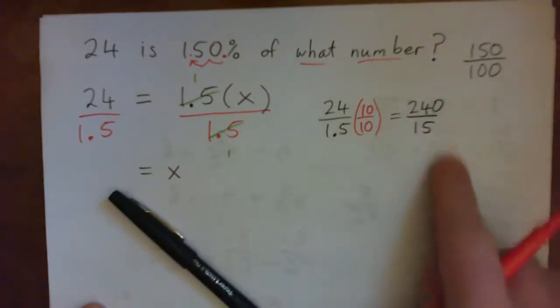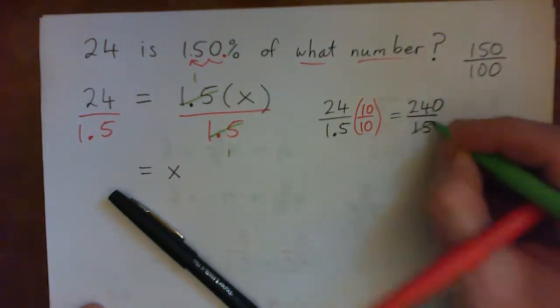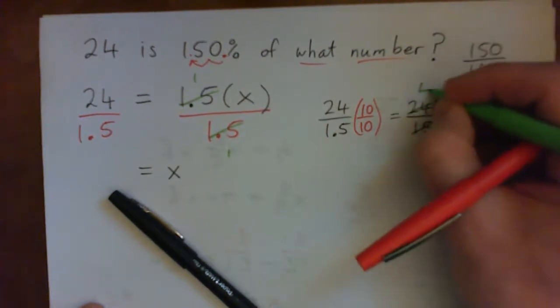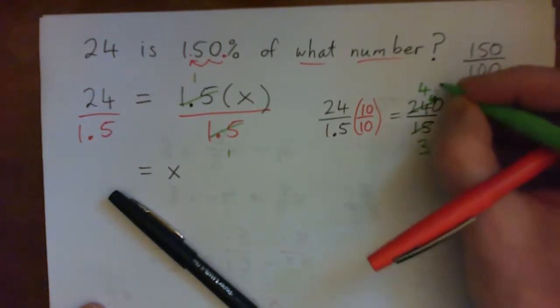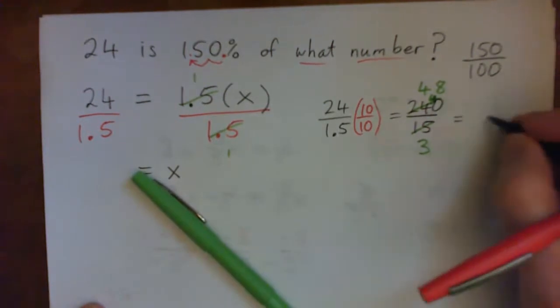And now we can simplify this fraction to figure out what the number is. So 5 into 15 goes 3 times. 5 into 24 goes 4 times. Remainder 4. 5 into 40 goes 8 times.